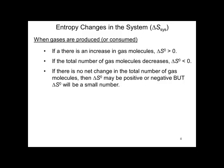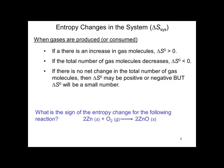If there is no net change in the total number of gas molecules, then delta S zero may be positive or negative, but will be a small number. What is the sign of the entropy change for the following reaction? Two moles of zinc reacts with O2 to yield two moles of zinc oxide. Total number of gas molecules go down, delta S is negative.